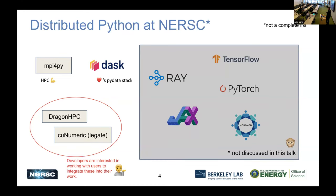I also want to mention Dask, which is more Python-focused and has a lot of interoperability with the PyData stack — NumPy, Pandas, and Scikit-learn. It's not as popular in HPC but is very popular outside HPC for making the most of resources on a single server or workstation, and also scaling out to multiple machines. There are also two more I'll talk about: DragonHPC and CuNumeric or Legate. You probably haven't heard of these before, but we've been working with their developers to get them running on Perlmutter.